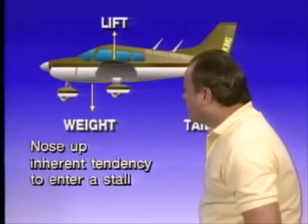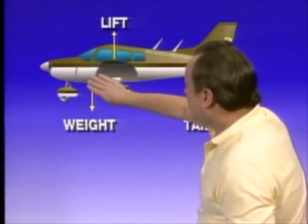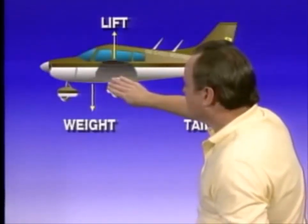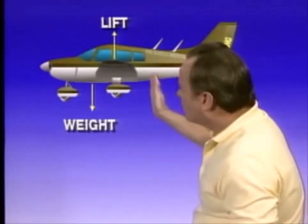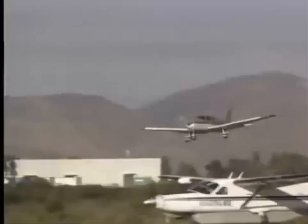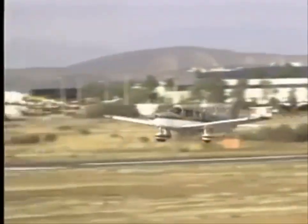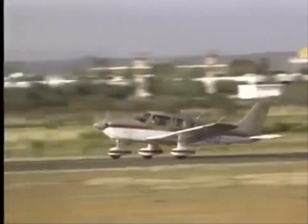As you move the center of gravity rearward, the stall speed becomes slower but the airplane becomes less stable and more efficient. On the other hand, if you move the center of gravity forward, the airplane becomes much more stable but much less efficient. It's also difficult to land an airplane with a forward CG because it's difficult to get the nose wheel up for landing and the tail down.